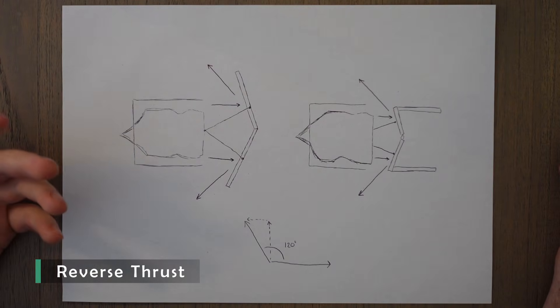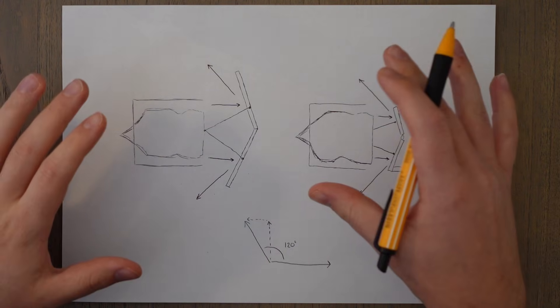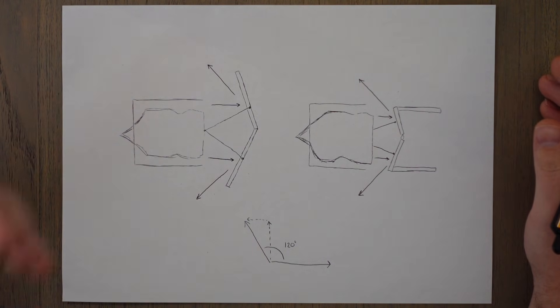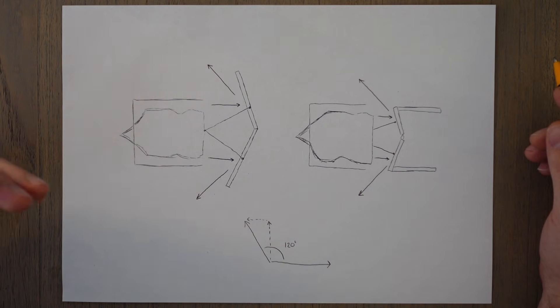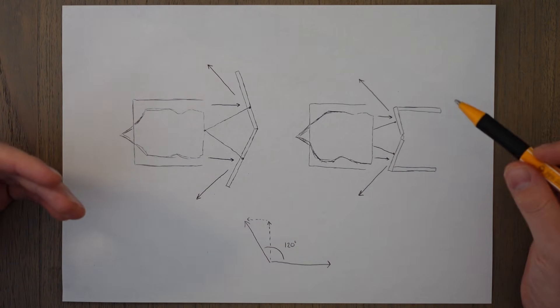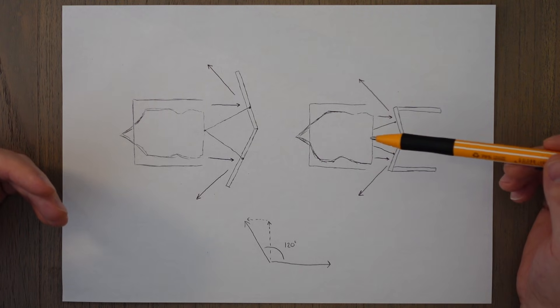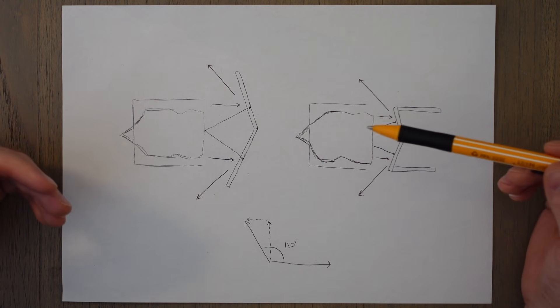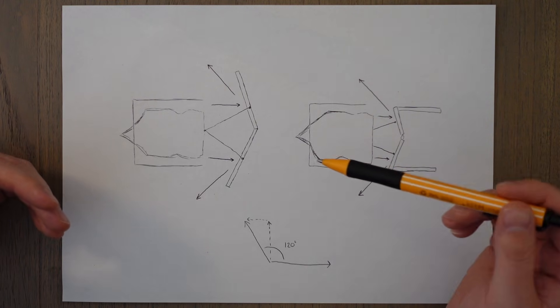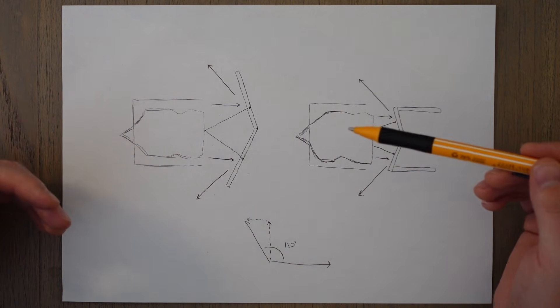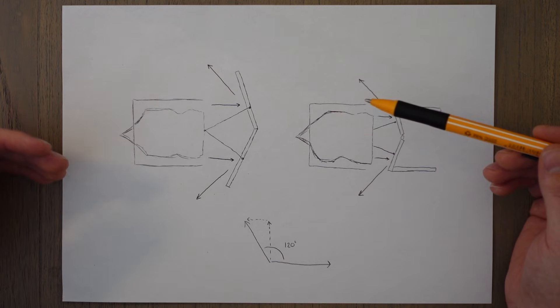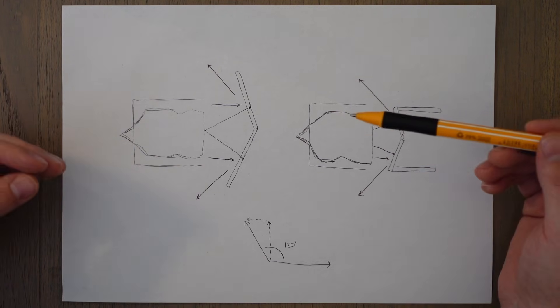The first system that we're going to look at today isn't really an ancillary system, but it is an extra system or feature that a lot of jet engines have. This is known as reverse thrust. Reverse thrust is used to redirect the flow of air coming out the back of the engine, and therefore the thrust direction also changes. This helps the aircraft to slow down on landing or in the case of a rejected takeoff.